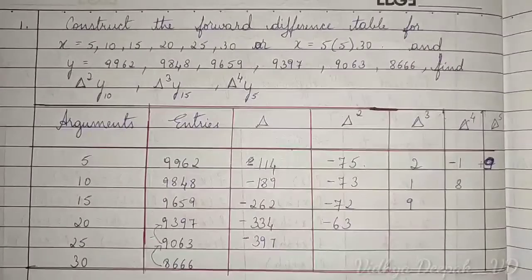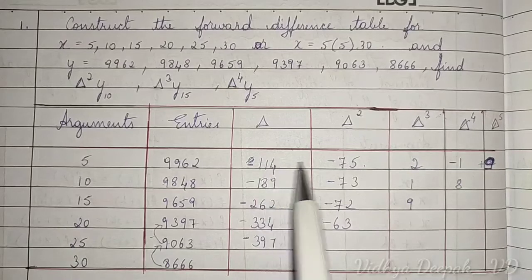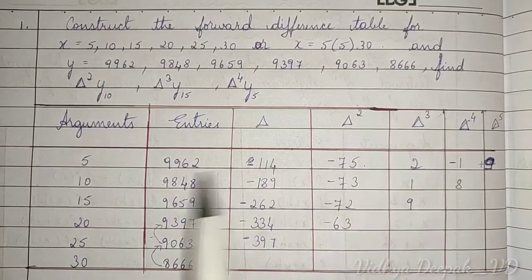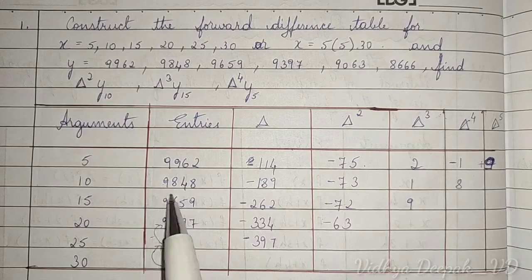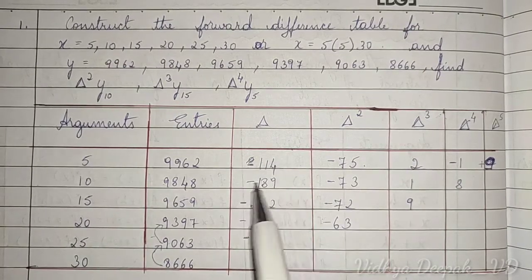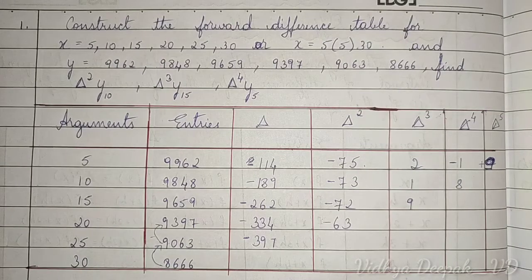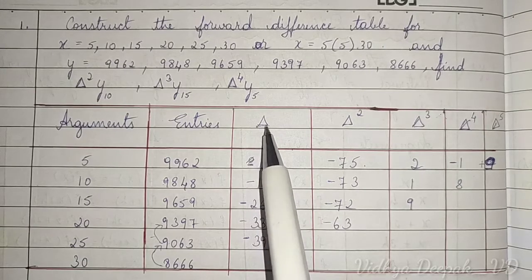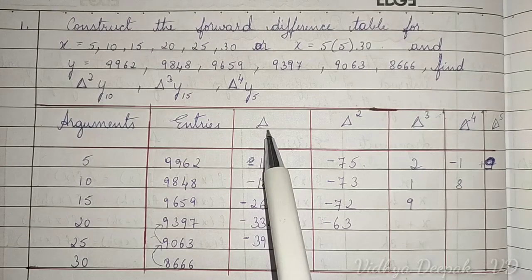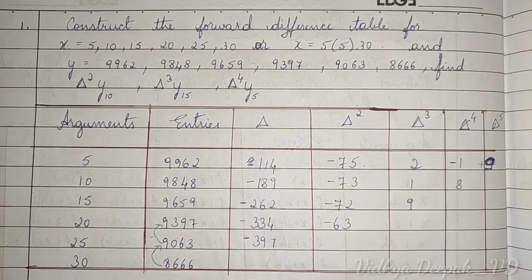The difference between a forward difference table and a backward difference table: for the forward difference table, you start the entry from the first line, entering line by line — first, second, third, fourth, fifth — and so on. The symbol for forward difference is delta (Δ), and the symbol for backward difference is nabla (∇). Let's look at a backward difference table to understand better.